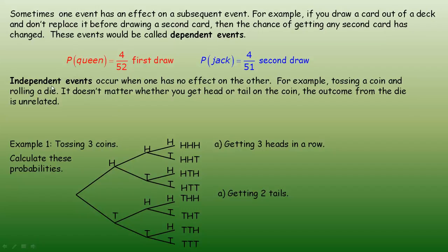Independent events occur when one has no effect on the other. For example, if you toss a coin and roll a die, it doesn't matter what you get on one — it doesn't change what you get on the other. If you get a head or tail on the coin, the outcome of the die is completely unrelated. The probability of getting a head is one in two, and the probability of getting a five on the die is still one in six regardless of what happened with the coin.